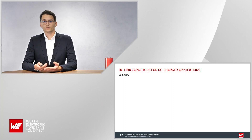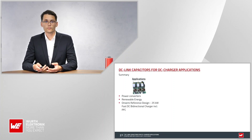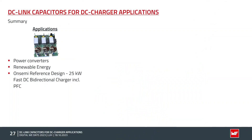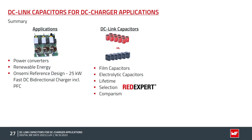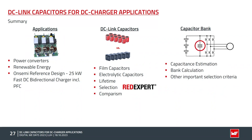Let's do a short summary. I gave an overview of applications and power converters, discussed the Onsemi 25 kW DC charger reference design, compared DC-Link capacitor types including film capacitors and their self-healing effect, and discussed electrolytic capacitors — their lifetime, selection in Red Expert, and a comparison of the two technologies. I showed formulas for estimating the required capacitance, did a bank calculation, and mentioned other important selection criteria.